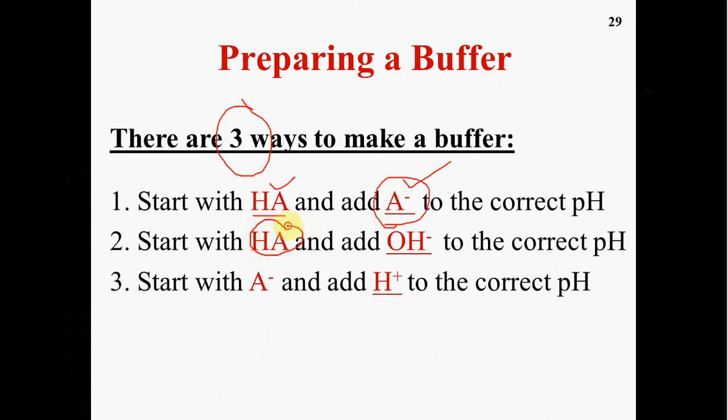You can take a weak acid and start titrating it with the hydroxide ion, which essentially will form the conjugate base. It will turn some of the conjugate acid into the conjugate base. Remember, that's what a titration is. So you can start with a weak acid and add hydroxide until you get the correct pH. Or you can start with the conjugate base and add hydronium ion to it so that you're converting some of the salt back into the weak acid, and you can do that until you reach the correct pH.